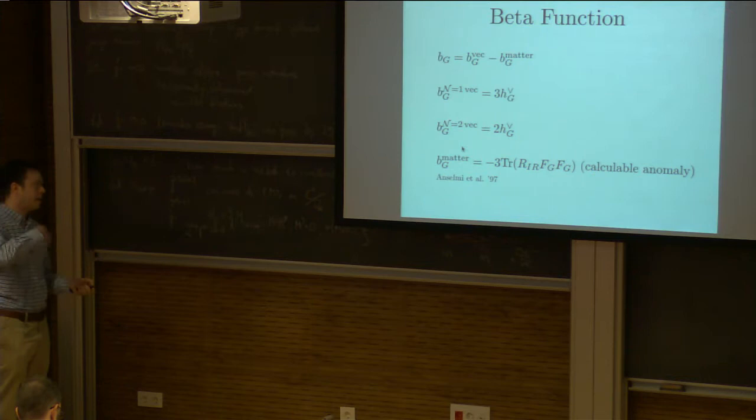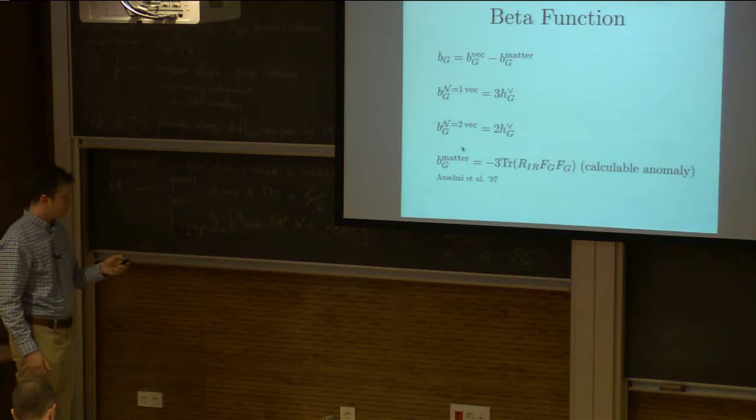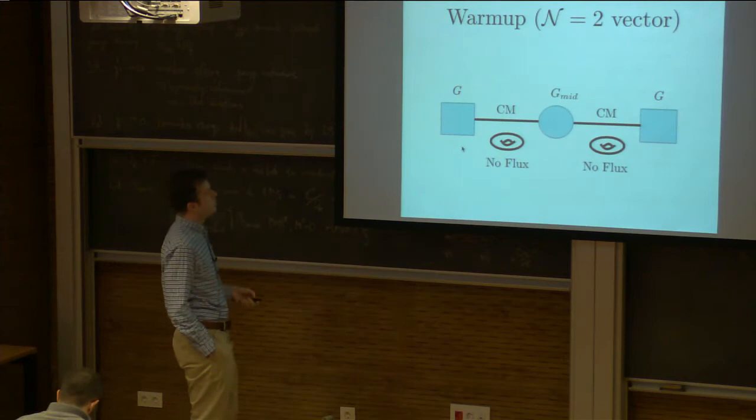For an N=1 vector multiplet it's just three times the dual Coxeter, and for N=2 there's also the adjoint chiral multiplet that takes you from three to two. You can calculate this because I already told you how to calculate the anomaly polynomial. Let's do N=2 as a warm-up with no fluxes — most examples for ease of exposition involve the simplest case on a torus with no fluxes switched on.